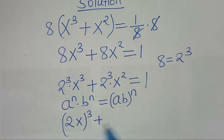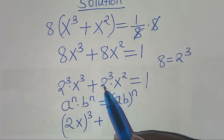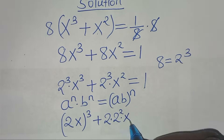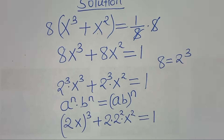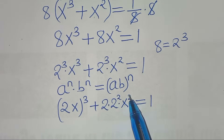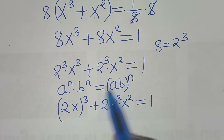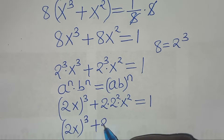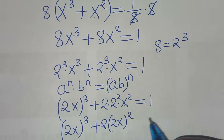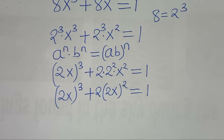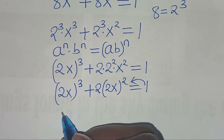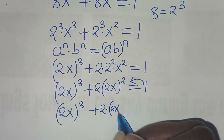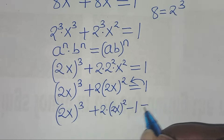Plus, we can express 2 to the power of 3 as 2 times 2 to the power of 2, times x to the power of 2. Applying the exponent property, we have (2x) raised to the power of 3, plus 2 multiplied by (2x) raised to the power of 2, this is equal to 1. Taking 1 to the left hand side, we have (2x)³ + 2·(2x)² − 1 = 0.